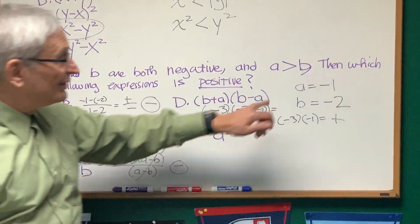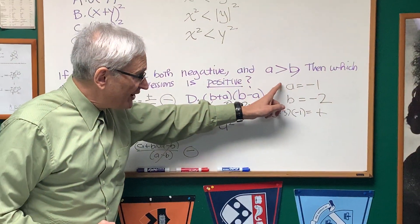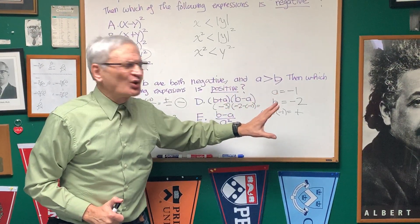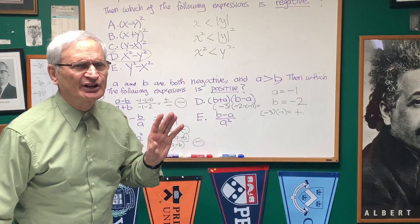And we did this simply by substitution. And again, the assigning of specific values to A and B clarifies the problem enormously because they're both negative, which otherwise can be very confusing.